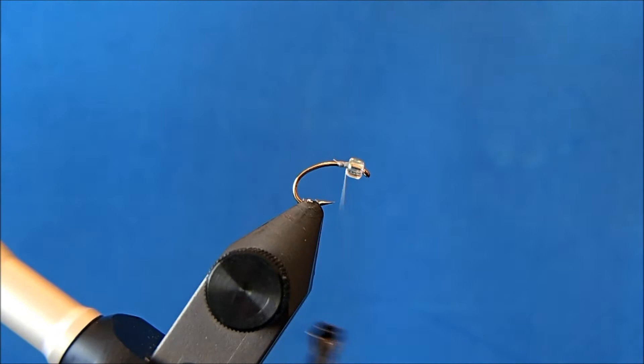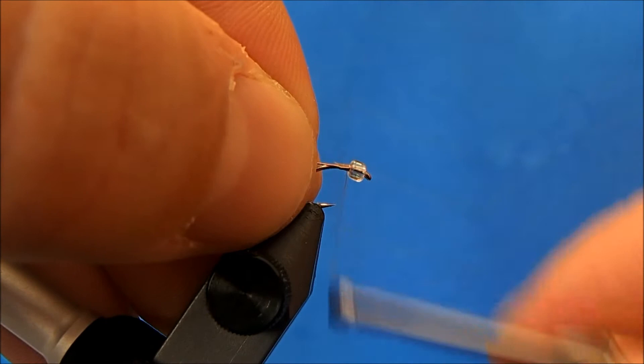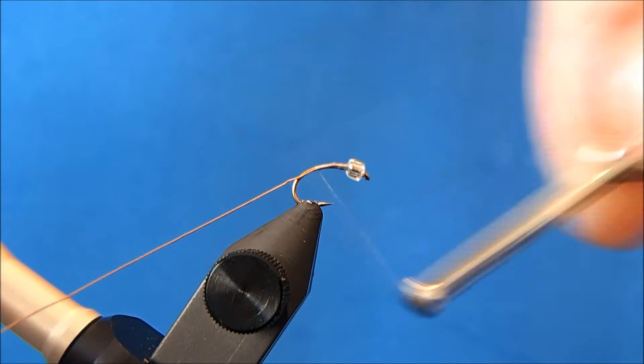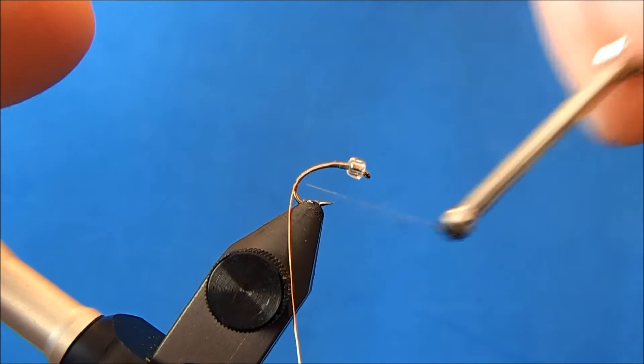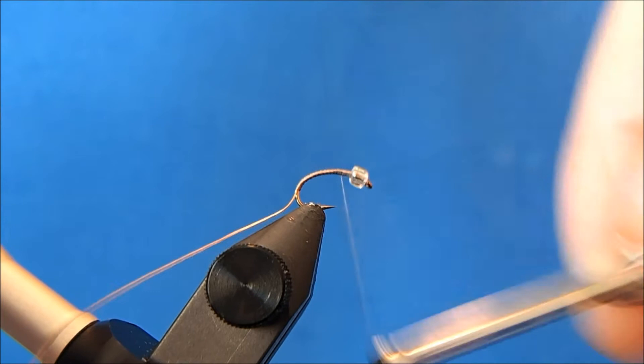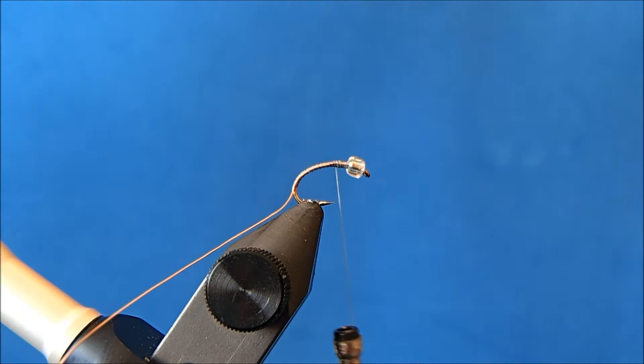Now I can tie in my rib and I'm going to use a small copper wire for the rib. I'll set it on the side, place it in the bead to seat it, and then I'll wrap it in following the contour of the hook shank and then back up.